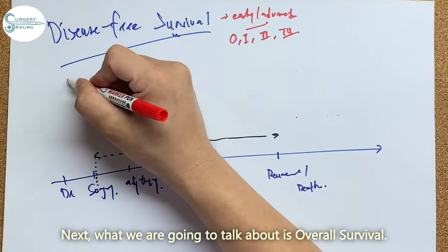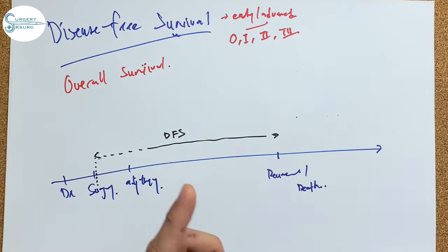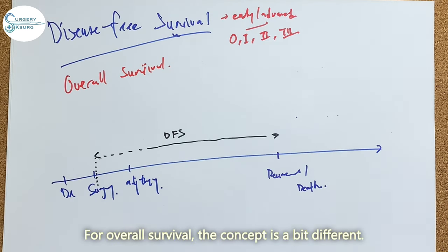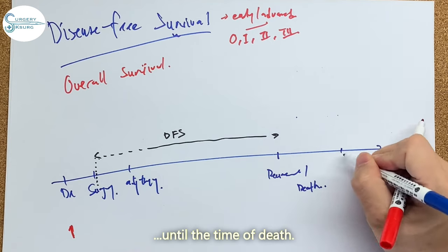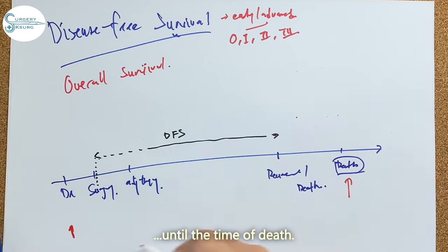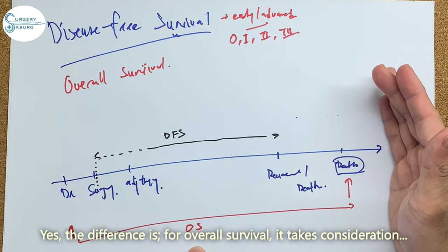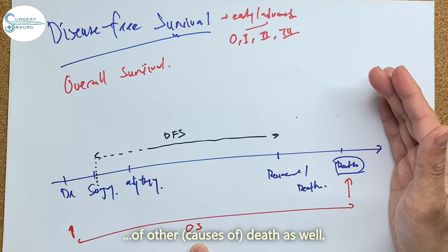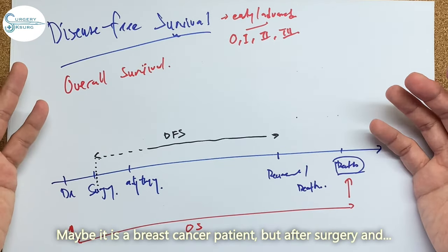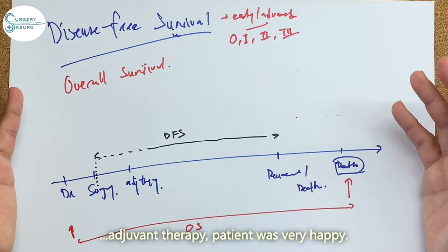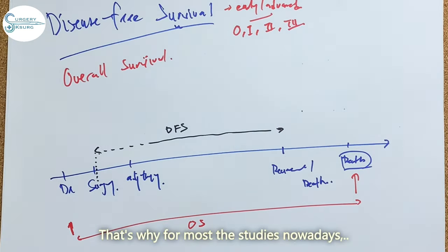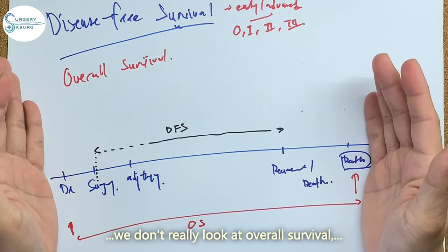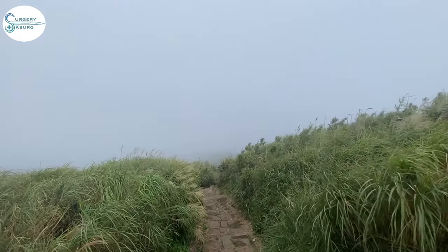Next, what we are going to talk about is overall survival. Overall survival, the concept is a bit different. The overall survival is from the time of diagnosis until the time of death. Yes, the difference is overall survival takes consideration of the death as well. Maybe it's a breast cancer patient but after surgery and adjuvant therapy the patient was very happy and suddenly there is a road traffic accident that caused death. That is included in overall survival. That's why for most of the studies nowadays, we don't really look at overall survival. We are looking at disease-free survival.